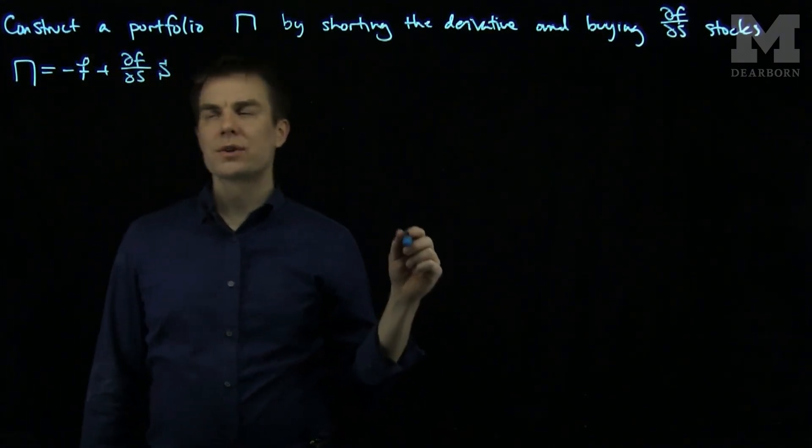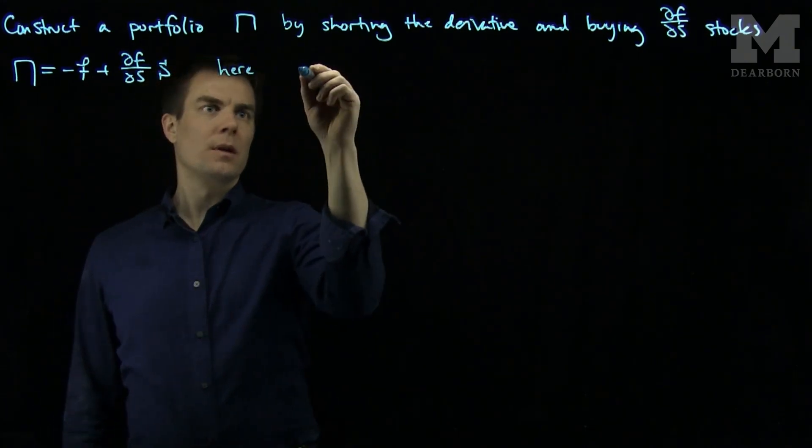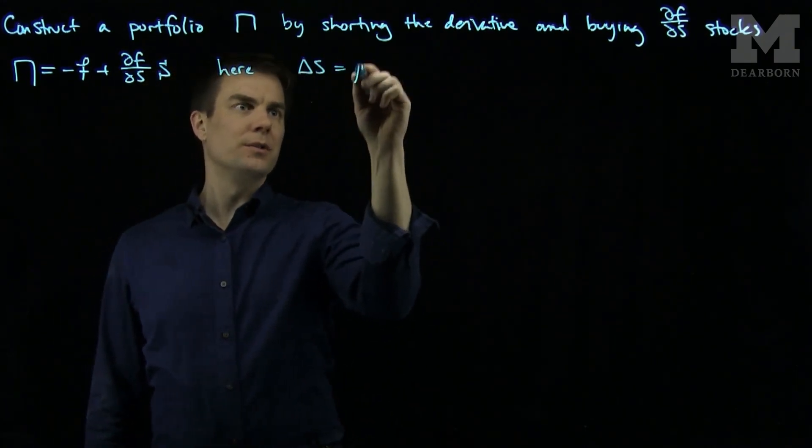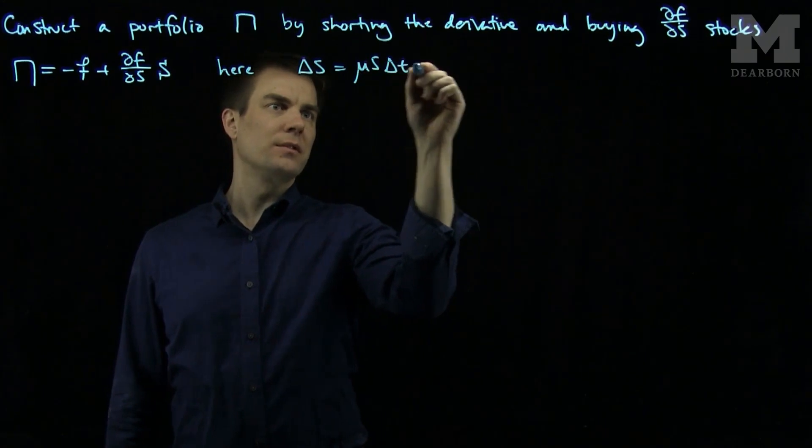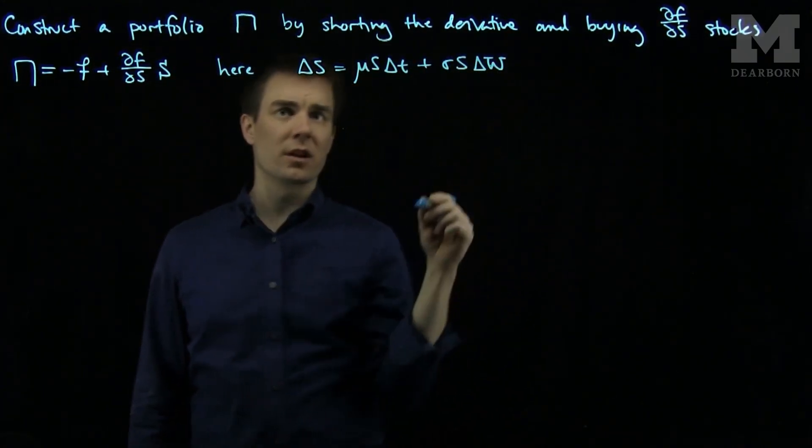And we saw that the stock ΔS is μSΔt plus σSΔW, for an increment of Brownian motion,